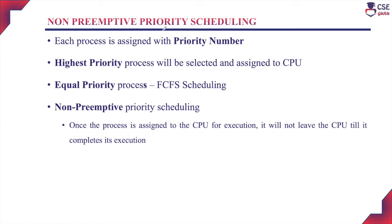To better understand priority scheduling, we can compare it with a hospital scenario. In hospitals, normal patients book an appointment and visit the doctor based on that appointment. But if there is an emergency case, the hospital administration admits the patient immediately and starts treatment immediately. This is the difference shown between normal and emergency patients. Similarly, in priority scheduling, priority shows the difference between a normal process and a preferential process. The preferential process is assigned the highest priority and executed with the CPU early compared to other processes.